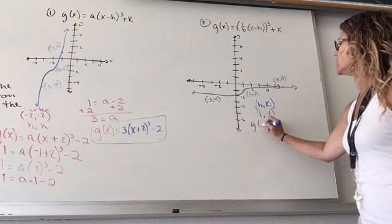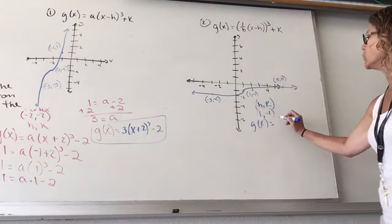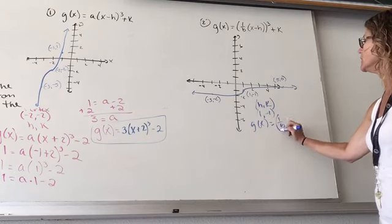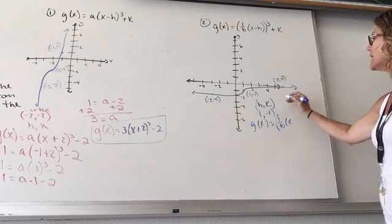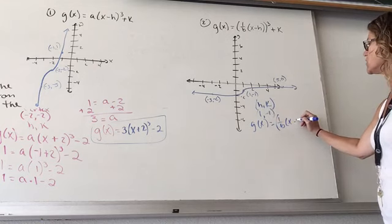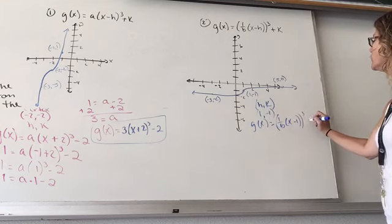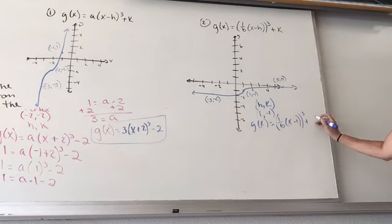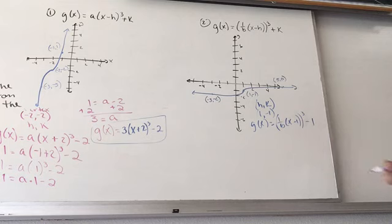So we're going to start. We say G(x) = (1/B)(x - h)³ + k. H is 1, so minus 1 cubed, plus the K value. Well, K is negative 1, so I'm not going to put a plus minus. I'm going to just put the minus in there.